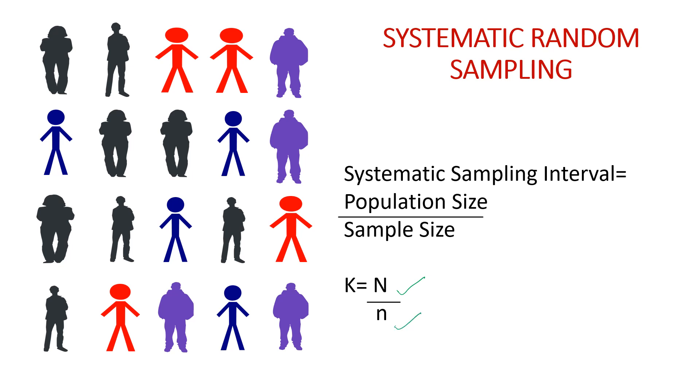Now, here I have a population of 20 individuals, that means my capital N is 20 and I want to draw a sample of let's say 4. So my small n is 4 here, that comes to K equals 5, that means the Systematic Sampling Interval is 5. I can start from any individual, I can start from the 1st individual, I can start from the 2nd individual, I can even start from the 5th individual. By giving the fixed periodic interval of 5, I need to go ahead.